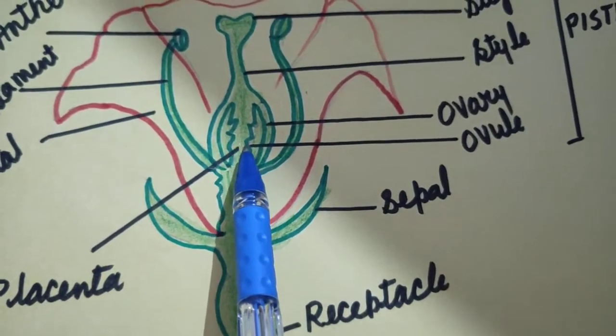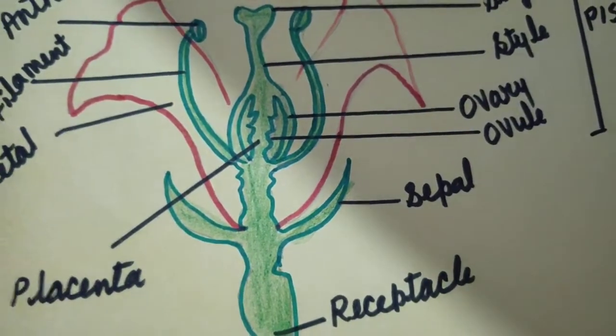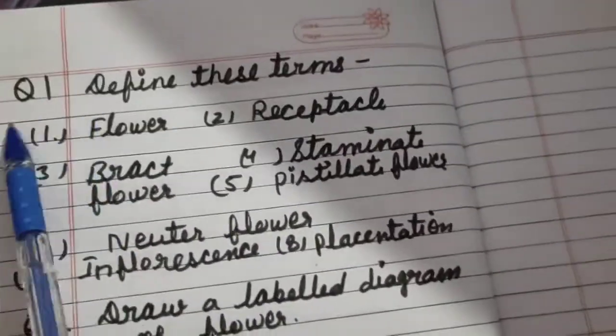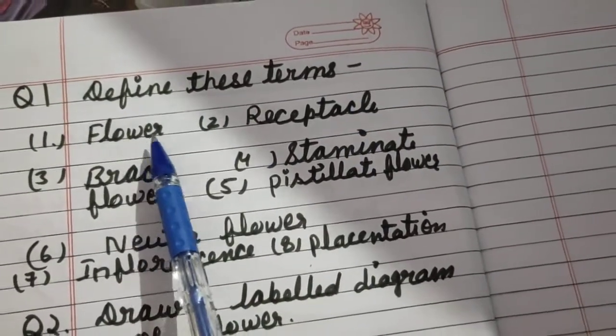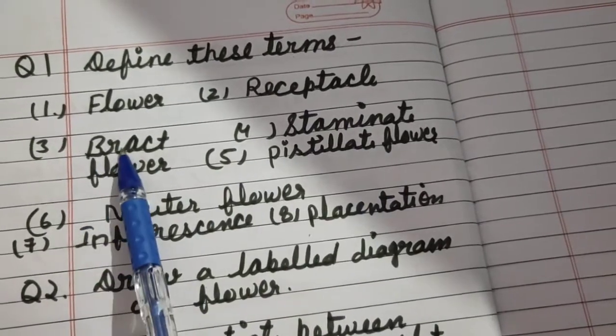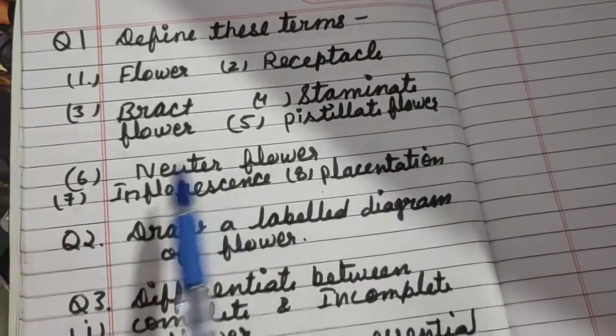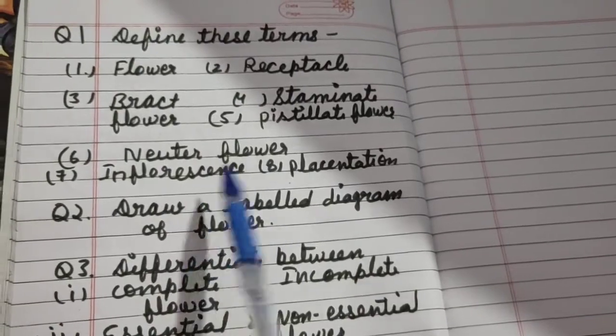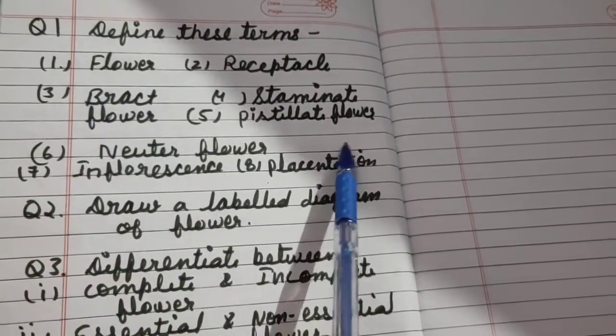So dear students, your chapter has finished. And today I am giving you some questions to write in your notebook. Please write these questions. Question number one: Define these terms. Flower. Receptacle. Bract. Staminate flower. Pistillate flower. And neuter flower. Inflorescence. Placentation. You have to write all definitions in your notebook.